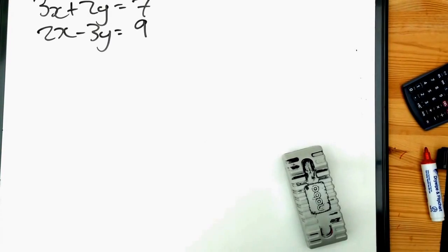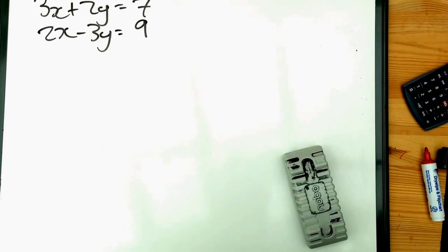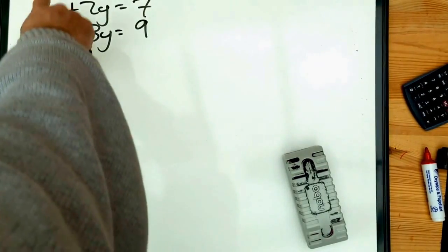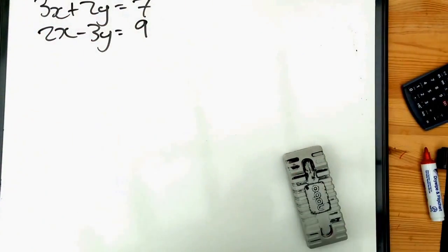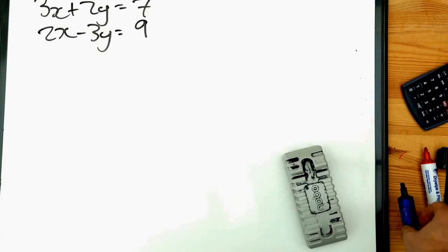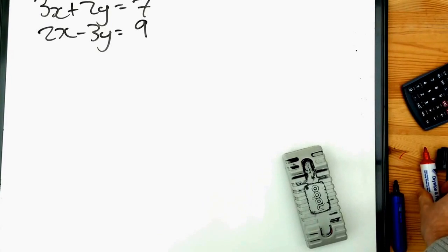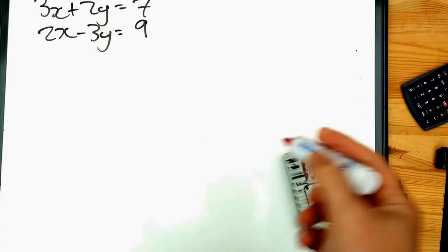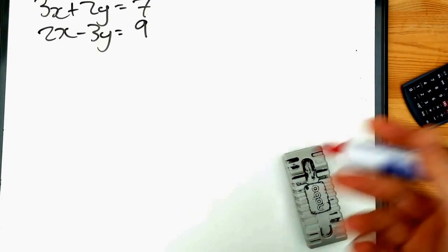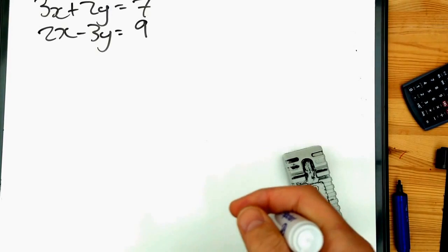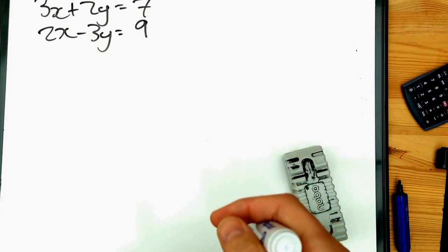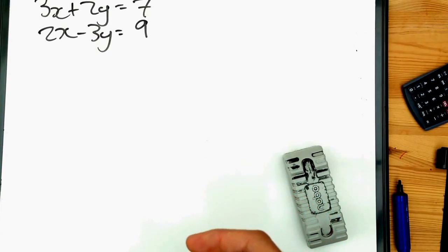We're going to solve these two simultaneous equations by elimination. First thing to notice is a different number of x's and a different number of y's. We can't solve it as it stands yet, so therefore we need to multiply both equations to make the same number of x's or the same number of y's. I'm going to do x's. I've got three x's in the top equation and two x's in the bottom equation.